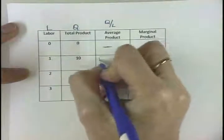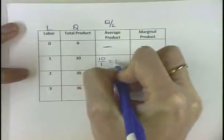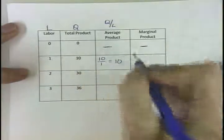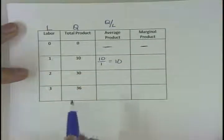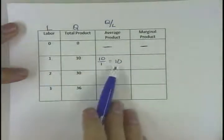So we're going to take 10 and divide it by 1. Our average product of labor for the first unit of labor is 10.